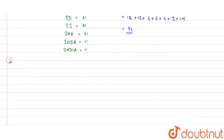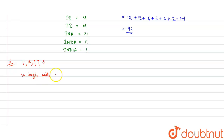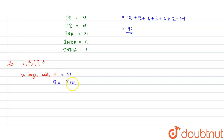Now the second word is SHRUTI. In alphabetic order, the letters are I, I, R, S, T, U. The number of words beginning with I is 5 factorial. Words beginning with R give 5 factorial divided by 2 factorial, since I appears twice.